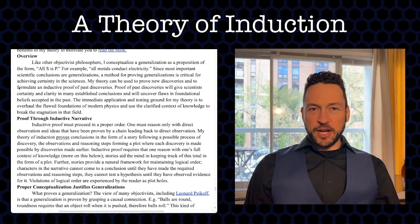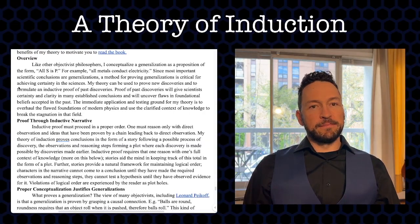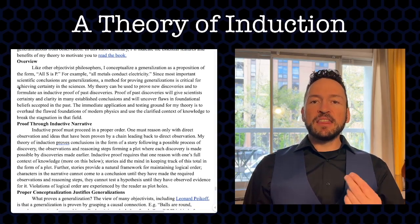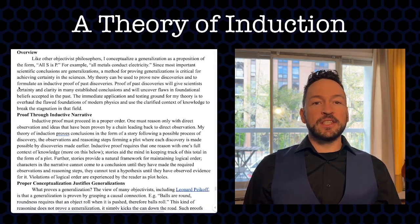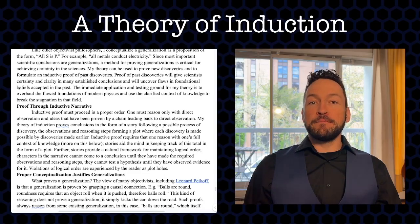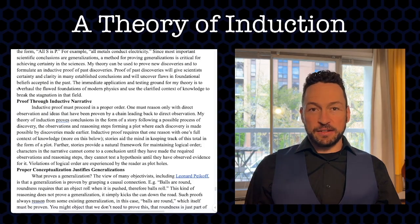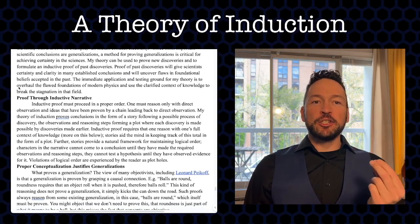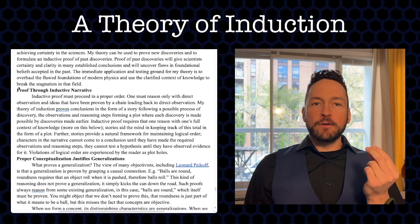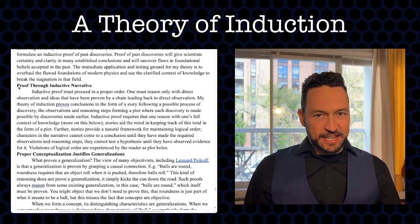Overview. Like other objectivist philosophers, I conceptualize a generalization as a proposition of the form 'all S is P' — for example, all metals conduct electricity. Since most important scientific conclusions are generalizations, a method for proving generalizations is critical for achieving certainty in the sciences. My theory can be used to prove new discoveries and to formulate inductive proofs of past discoveries, uncovering flaws in foundational beliefs. The immediate application is to overhaul the flawed foundations of modern physics and break the stagnation in that field.